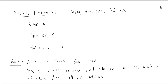Now we proceed. How to calculate the mean, variance, and standard deviation from the binomial distribution. We have the symbol mu for the mean, the symbol for variance, and the standard deviation for the binomial distribution.